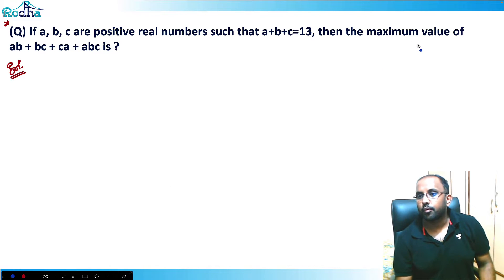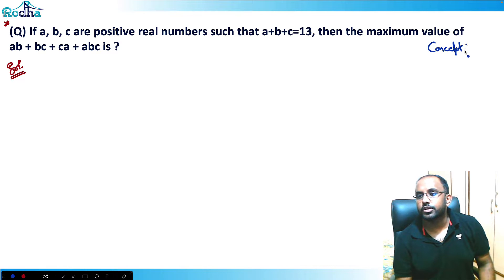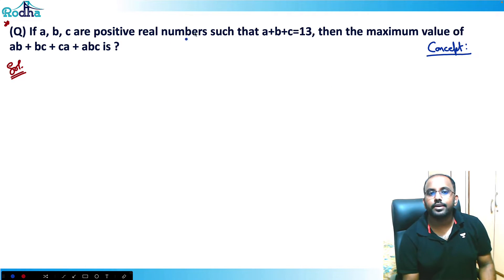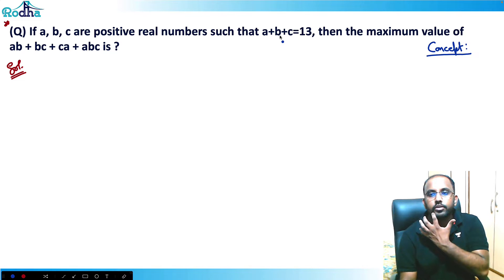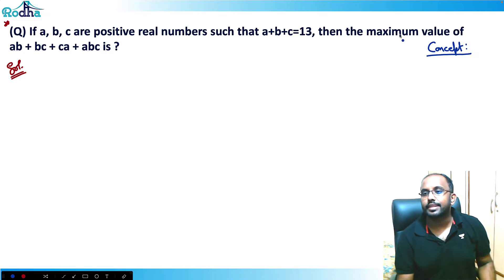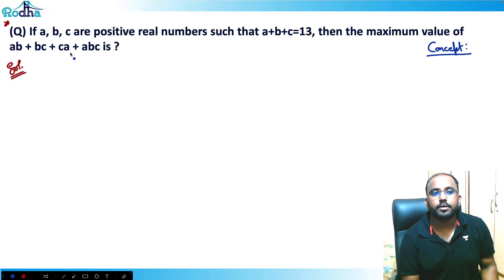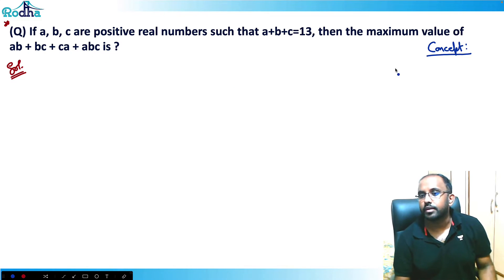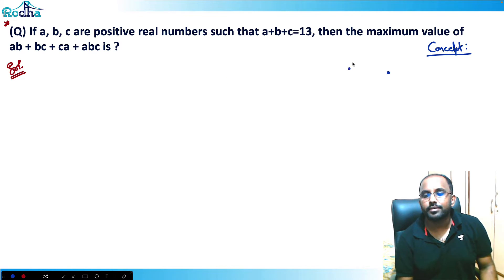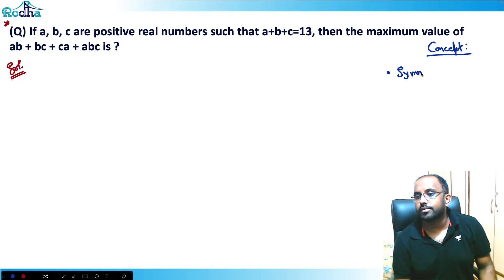What is the concept used behind such questions? Basically, this question says that if a, b, c are positive real numbers such that a plus b plus c equals 13, then the maximum value of ab plus bc plus ca plus abc is what. Now, an equation like ab plus bc plus ca plus abc is called a symmetric or cyclic equation.